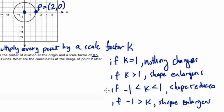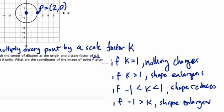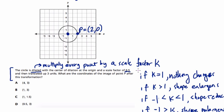So we're not really dealing with negative Ks, but I think for our purposes here, we need to know that if K is 1, nothing changes. If it's bigger than 1, the shape gets bigger. And if we have a fraction, essentially, the shape's going to get smaller.